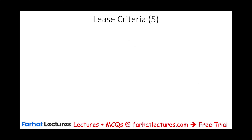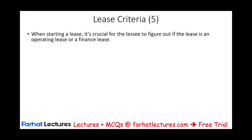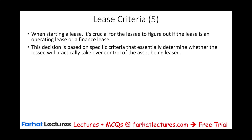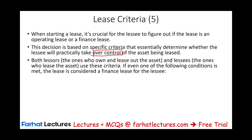There are five criteria to review in order to determine whether a lease is a finance lease or an operating lease. This is done at the inception of the lease, and the same criteria apply to both the lessee and the lessor. All we have to do is meet one out of five criteria — just one — for the lease to be classified as a finance lease.